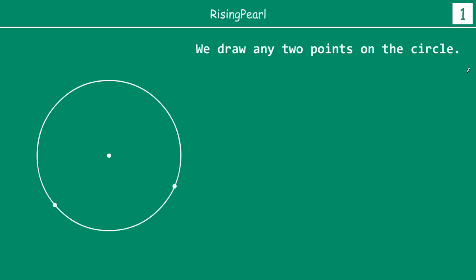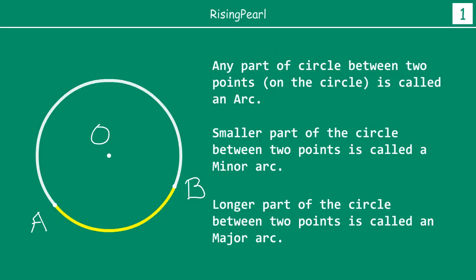In the last webisode we saw that if we draw a circle with center O, and we take any two points on this circle — let's name them A and B, though you can write them as P and Q, D and F, or X and Y — these two points divide the entire circle into two parts. Any part of the circle between the two points is called an arc. The smaller arc, highlighted in bright yellow, is called the minor arc. The longer part of the circle between the two points is called the major arc.